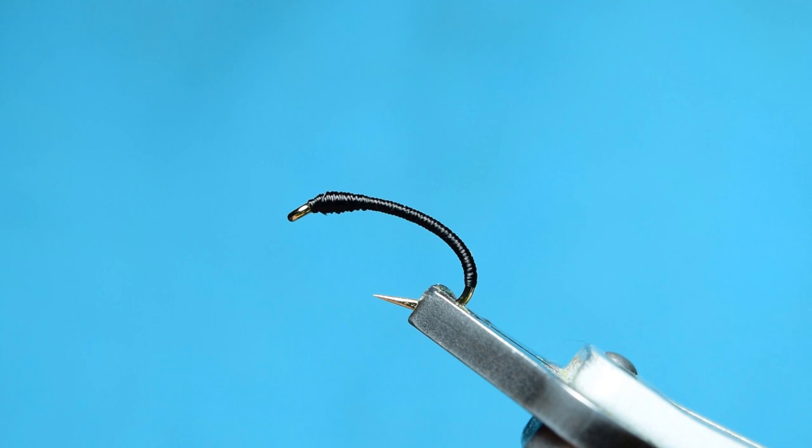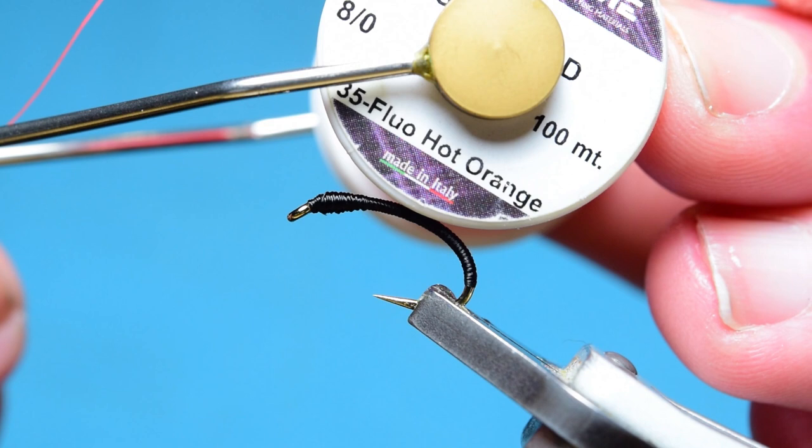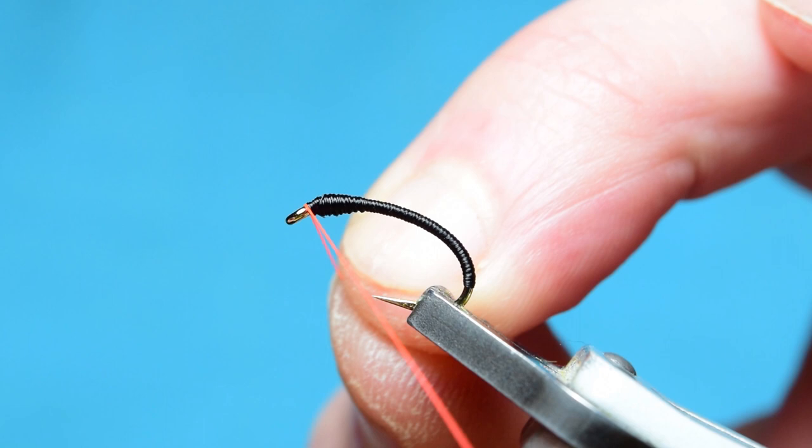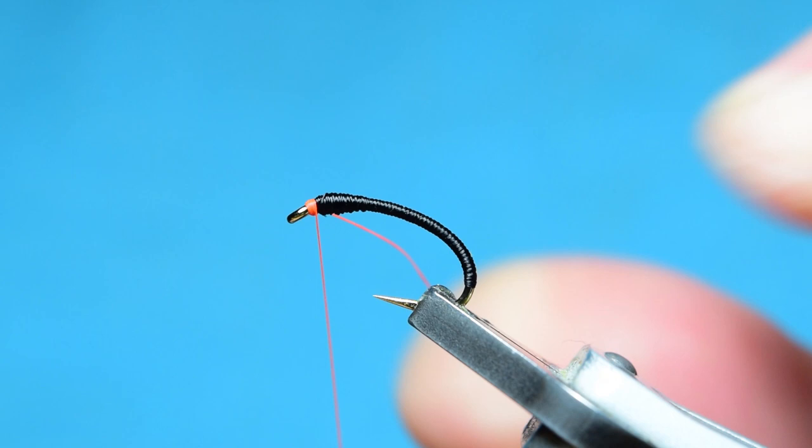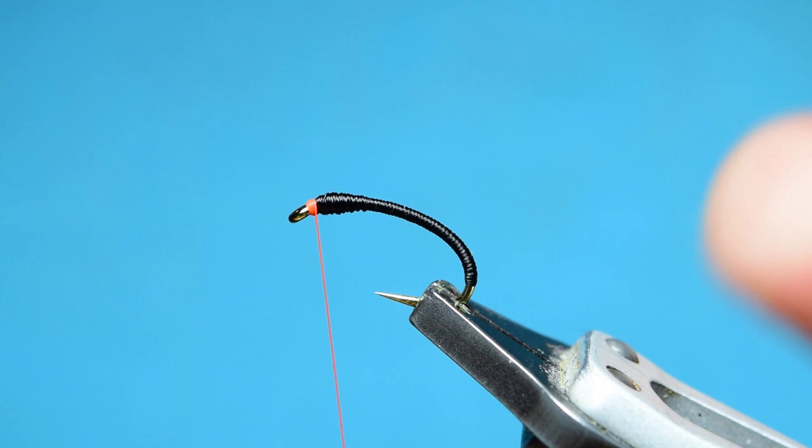Now next step is the next head thread. This is Tech Stream 80 in fluorescent hot orange. And all you need to do is put this thread at the eye, and then one, two, three, four, five, just six turns, just to secure this tag end in. Come in, trim off the excess.